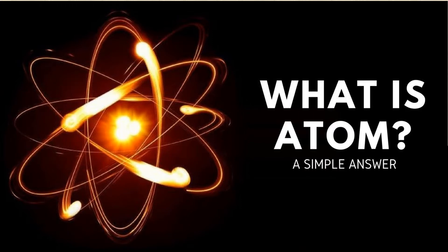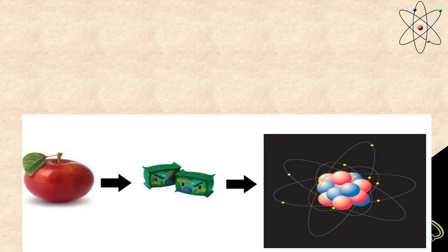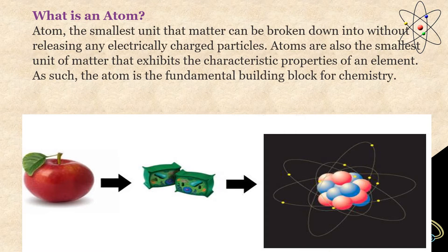Now let's begin with the very important part — the actual topic of the chapter. If I have an apple and you cut it, you will find cells. If you further break down this apple, you will find that the smallest particle is the atom. So an atom is the smallest unit that matter can be broken down into. Atoms are also the smallest unit of matter that exhibit the characteristic property of an element. The atom is the fundamental building block for chemistry.